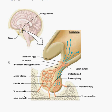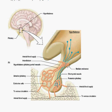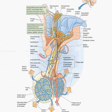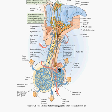For the posterior pituitary, it is supplied by the inferior hypophysial artery, with venous drainage via the posterior hypophysial veins. As mentioned before, the nerve terminals of the posterior pituitary do not release their products at the primary plexus — they travel all the way down into the posterior pituitary itself. To summarize: the superior hypophysial artery supplies the anterior pituitary, and the inferior hypophysial artery supplies the posterior pituitary.